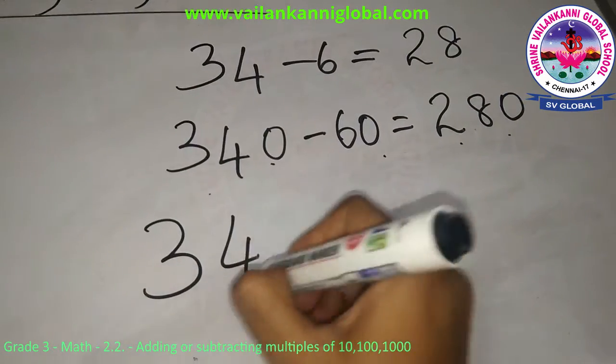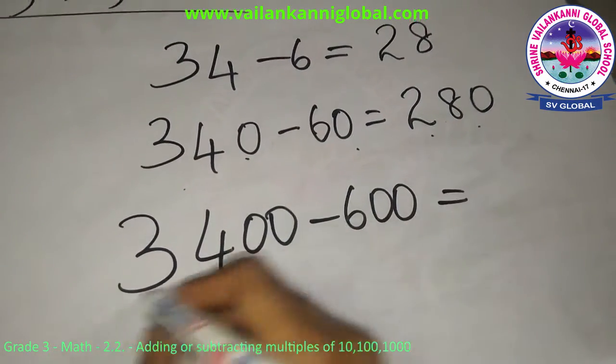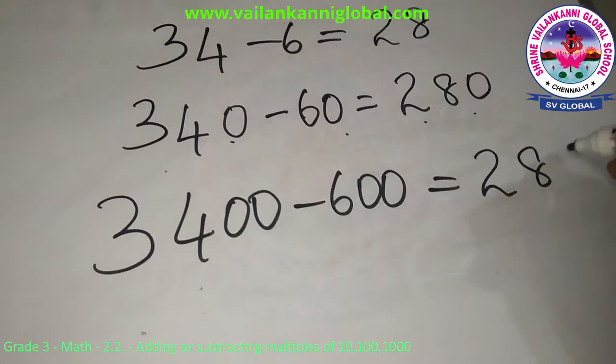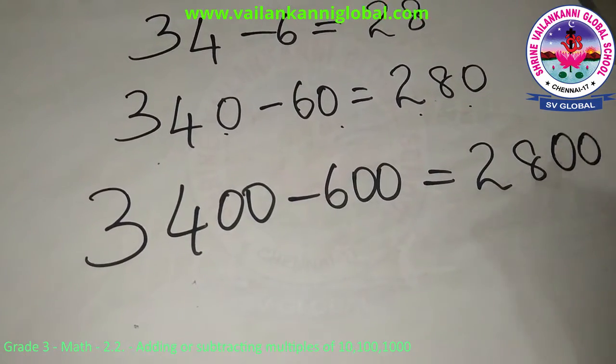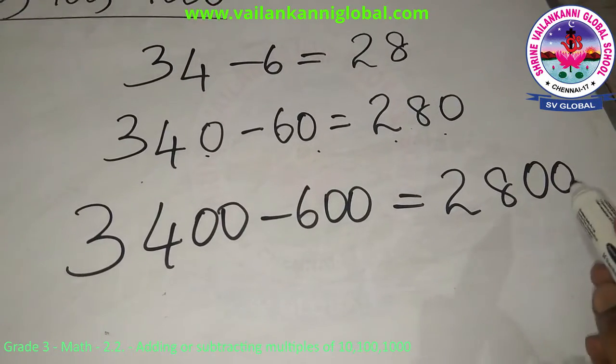So again 3400 minus 600. So 34 minus 6 again it is 28 and add these two zeros towards the last. You will add the zeros towards the last in your answer.